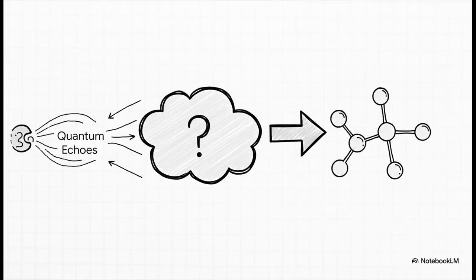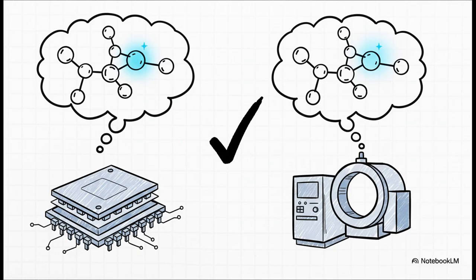So what was that first useful task? Well, Google teamed up with researchers at UC Berkeley to use this new tech for something that's incredibly important in chemistry and biology, predicting the exact shape and structure of molecules. And the results were just wow. They used quantum echoes on the Willow chip, got their predictions for a couple of molecules, and then took them to a real lab to check them with standard equipment. The result? A perfect match. I mean, not close. Perfect.